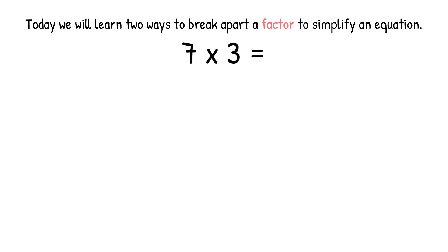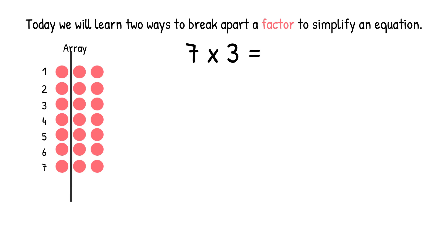Let's look at the equation 7 times 3. The first strategy we will use is breaking apart an array. Remember, the first factor tells us how many rows, and the second factor tells us how many in each row. So we're going to make seven rows with three in each row. Then we have to choose a way to split up the array. I am going to make a straight line after the first column.